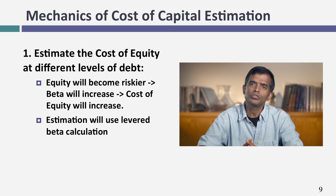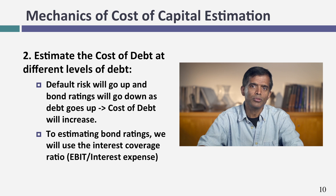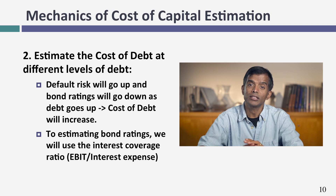Here's what we're going to do. Remember how we computed Disney's cost of equity? We started with an unlevered beta based on the business it's in, then levered it using a debt-to-equity ratio. If I change my debt-to-equity ratio, I can tell you what the levered beta and cost of equity will be at each ratio — that's exactly what I'll do. For the cost of debt, I'll compute an interest coverage ratio (operating income divided by interest expense), use that to estimate a synthetic rating, and use that rating to get a pre-tax and after-tax cost of debt at each debt ratio.